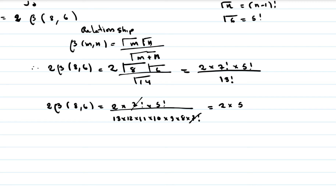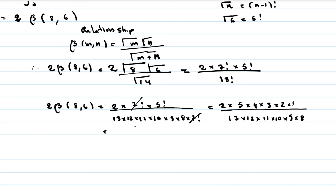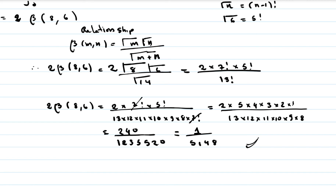After cancellation we have 2 times 5 factorial in the numerator. 5 factorial equals 5 times 4 times 3 times 2 times 1, which equals 120. The denominator is 13 times 12 times 11 times 10 times 9 times 8, giving 1,235,520. Multiplying 2 times 120 gives 240. Dividing 240 by 1,235,520 gives 1 over 5148, which is the result of our first exercise.